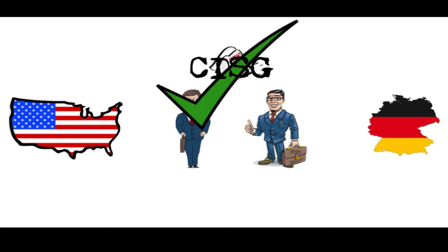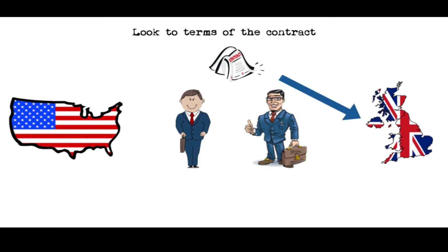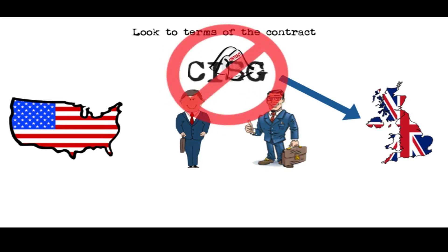But now let's change our facts just a little. Let's say that instead of being from Germany, our trading partner is from the United Kingdom. Now, as I said, the United Kingdom is not a member of the CISG. But the treaty could still apply — it depends on what the contract says and what the state law says. If the contract says that British law applies, then it's easy: because Britain is not a member of the CISG, the treaty doesn't apply.